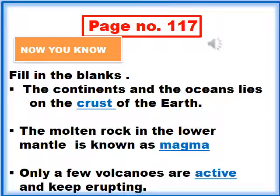Fill in the blanks on page number 117. As you know, the continents and the oceans lie on the crust of the earth. The molten rock in the lower mantle is known as magma. Only a few volcanoes are active and keep erupting.